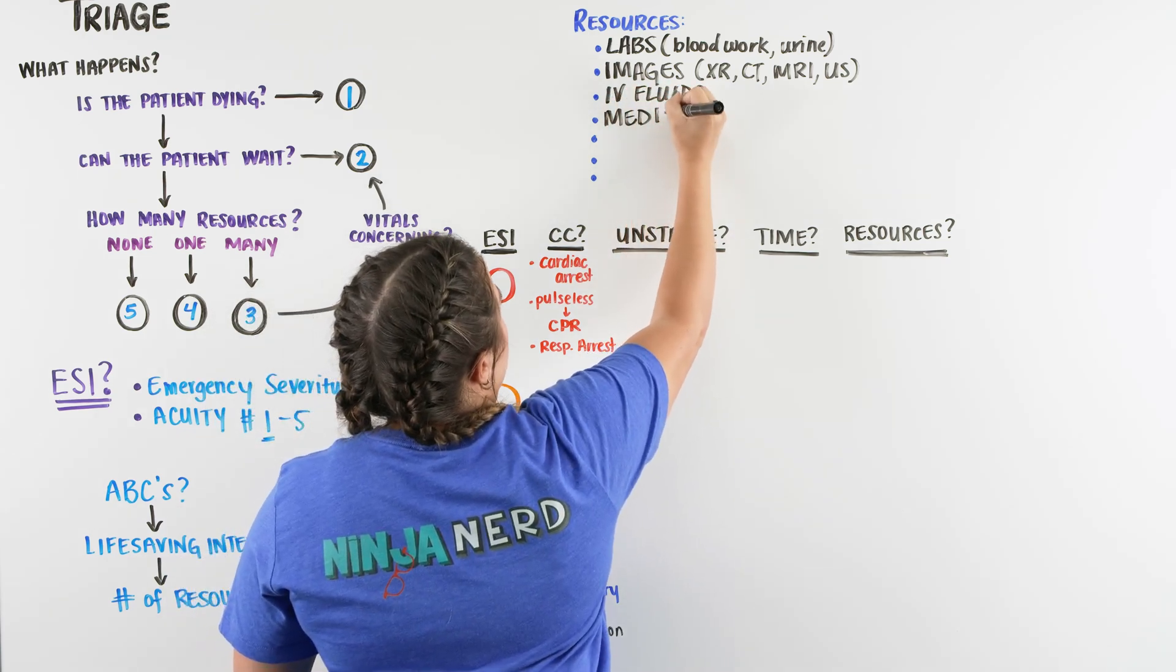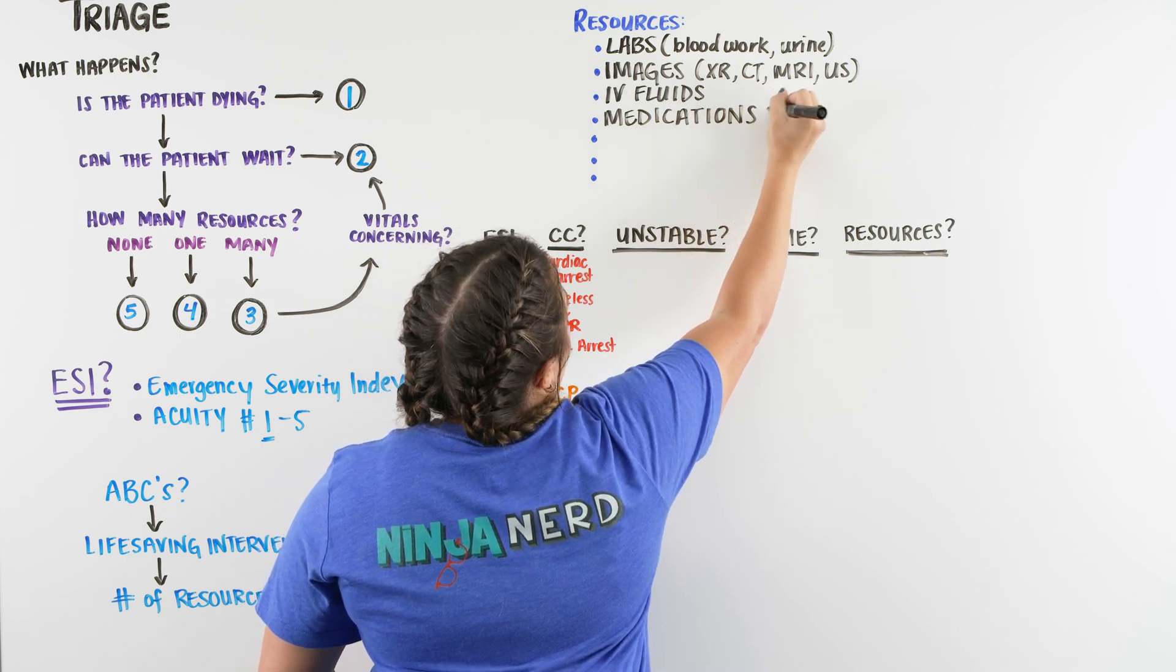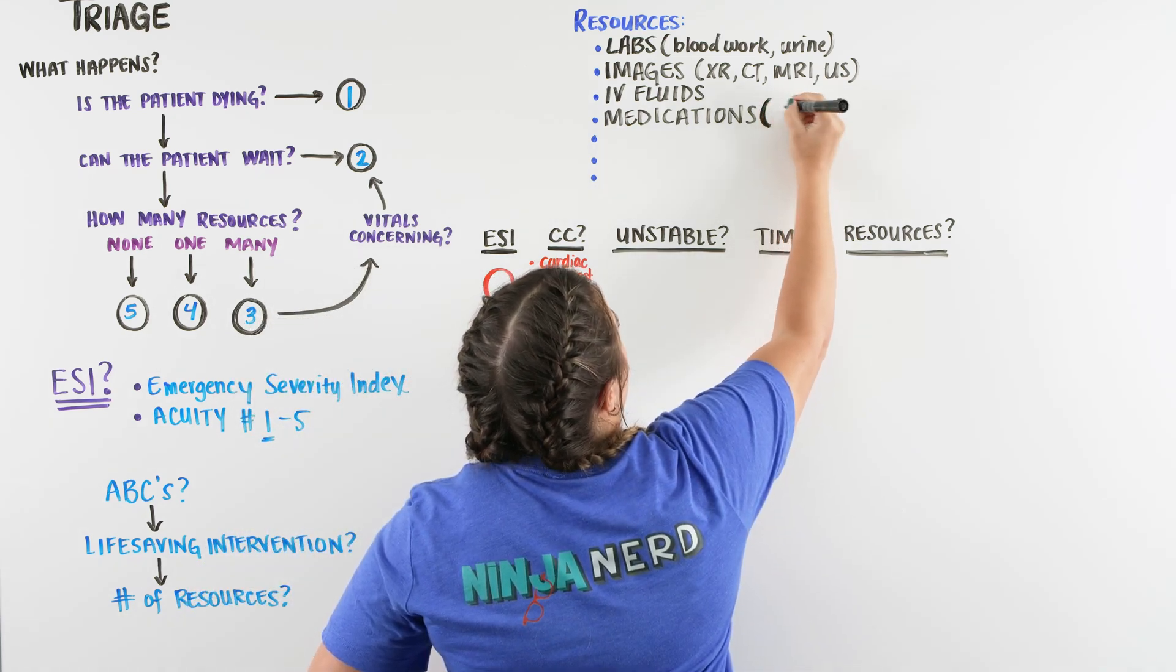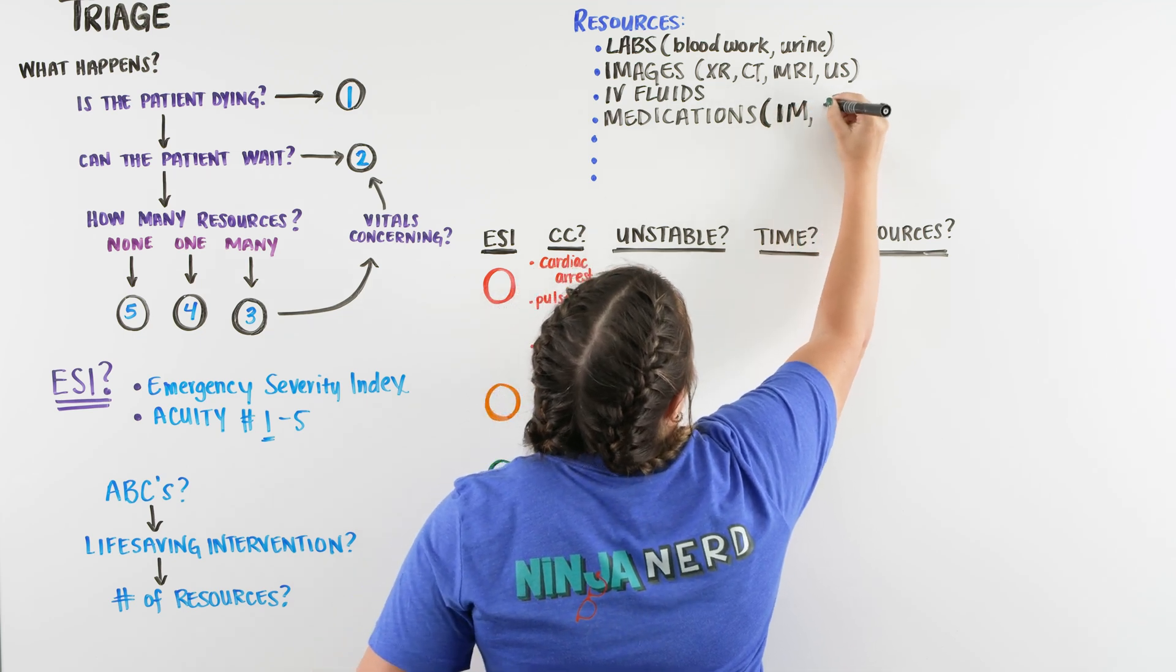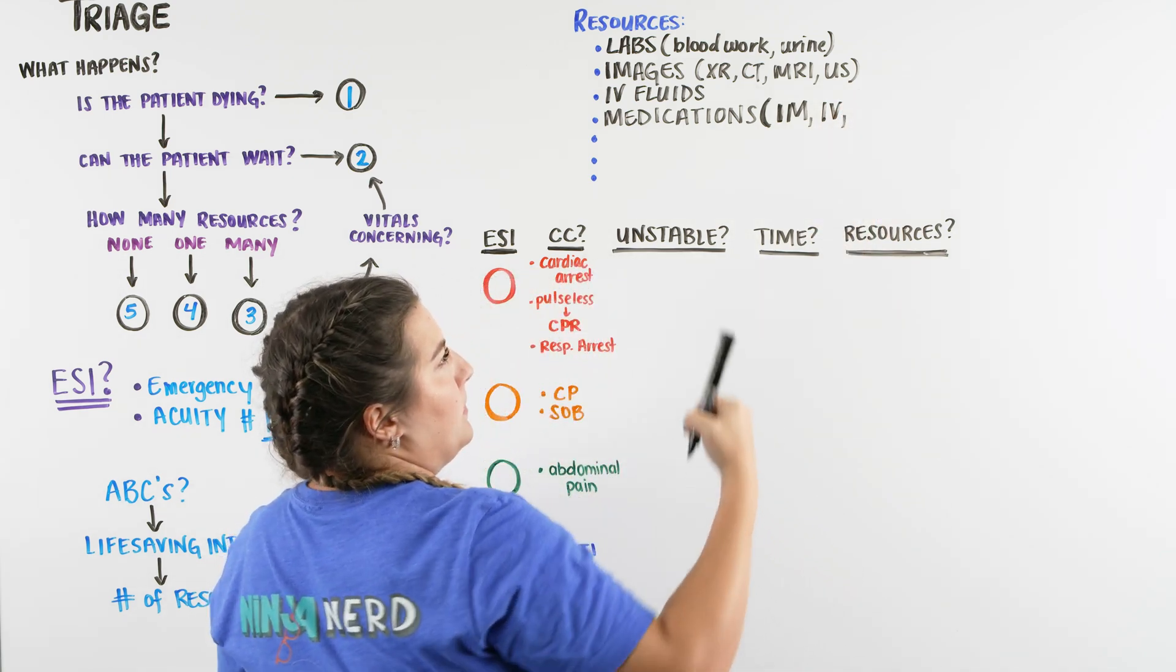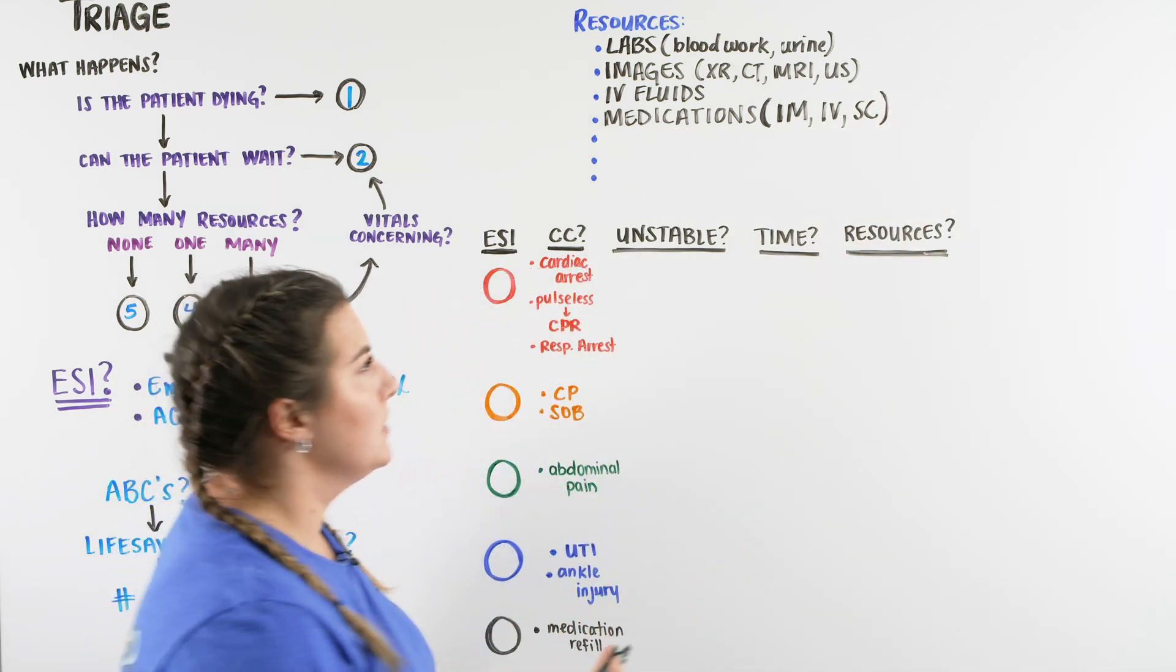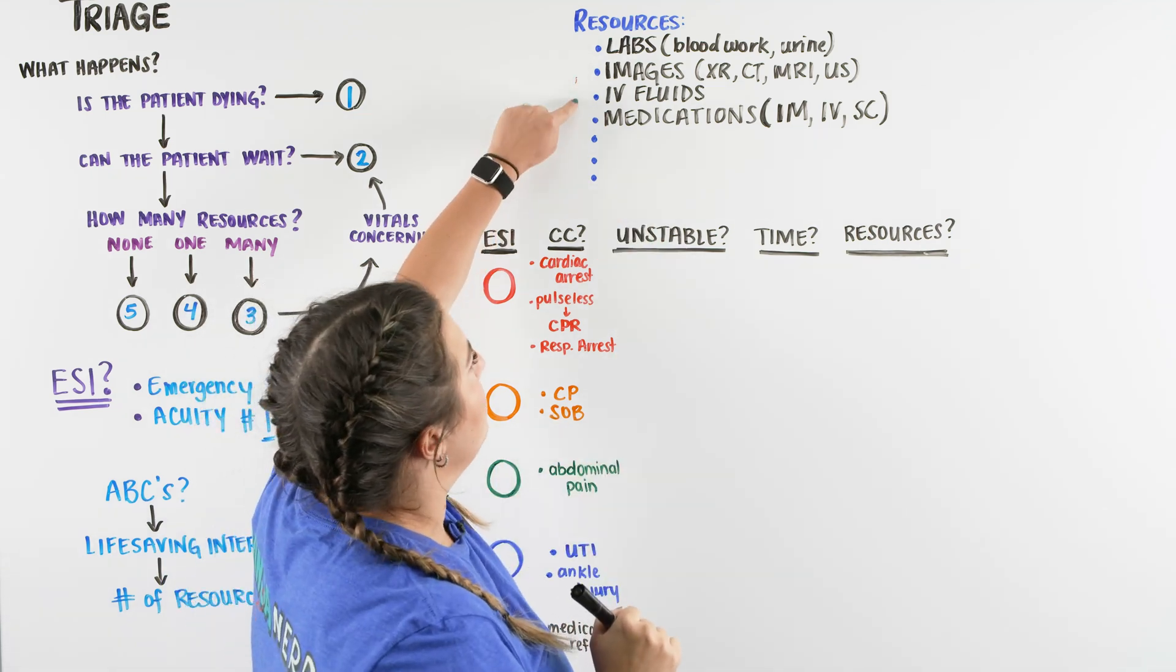And there's another thing we usually give our patients is medications. Now the one thing about the severity index, or the ESI, is that they do not include oral medications in a resource. They do not consider that. So we need to think, what are other types of routes of medications that we can give? So you want to think IM, intramuscular shot, IV, intravenous, and what's another type that we can give them? Sub-Q. So these are some medications that we can be given to our patients.